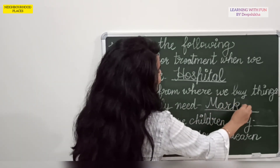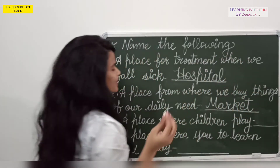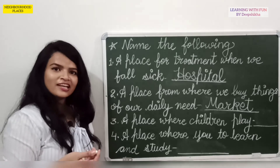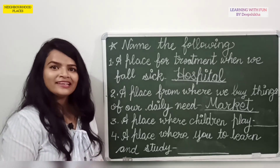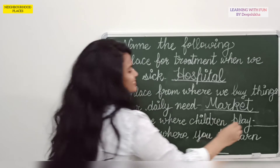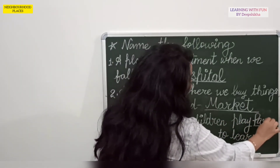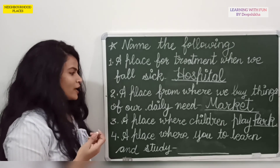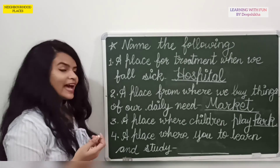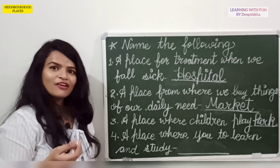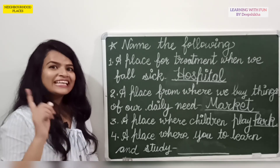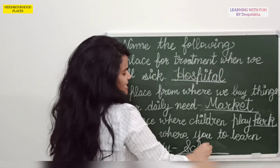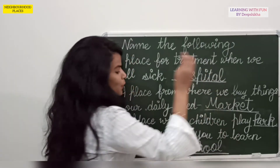Next, a place where children play — where do you go to play? Yes, it is Park. P-A-R-K, park. Next, a place where you go to learn and study — where do you go to learn and study? Yes, it is a School. S-C-H-O-O-L, school.